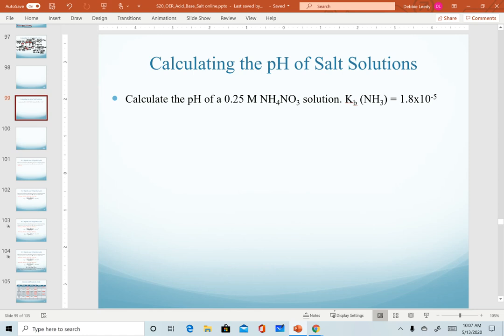We'll be calculating the pH of an ammonium nitrate solution in this video. Our question here is to calculate the pH of a 0.25 molar ammonium nitrate solution given the Kb of ammonia as 1.8 times 10 to the minus 5.